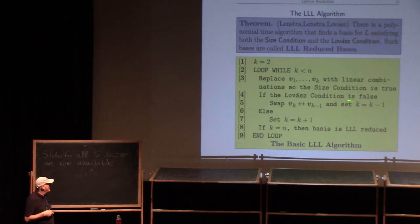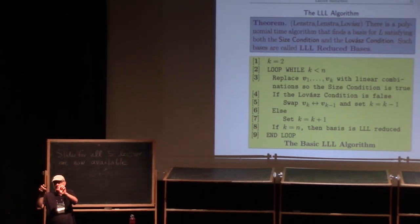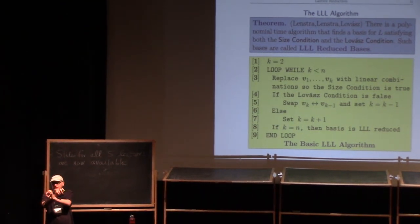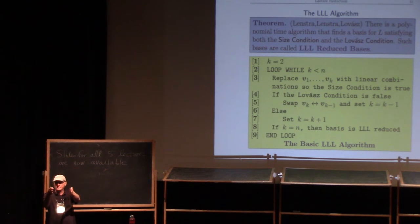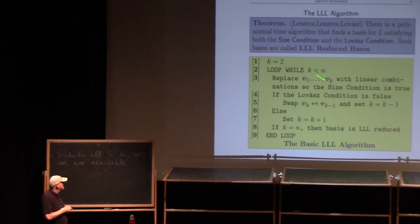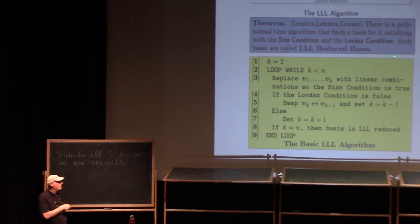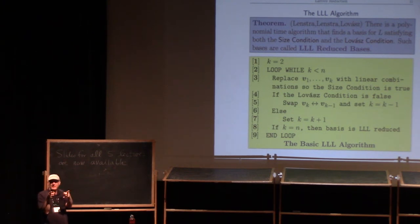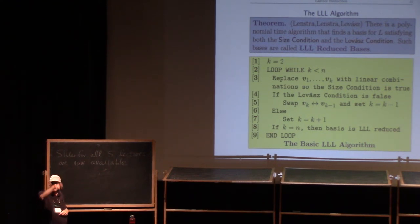But the Lovász condition may well fail. At that point I take the kth vector and the (k−1)th vector and swap them, then decrement k — so I'm considering one fewer vectors. What happens is: I start with two vectors, maybe Lovász is true and I have three, then four, but then Lovász is false, so I swap the third and fourth vectors and go back to studying three vectors. So k goes up and down and up and down.